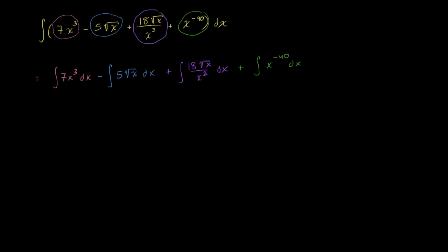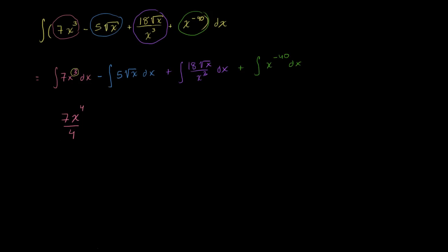Let's look at the first one. I'm going to find the antiderivative without the constant — we'll add the constant at the end to get the most general antiderivative. The exponent is 3, so we increment it by 1 to get x to the fourth, then divide by 4. So the antiderivative of 7x³ is 7x⁴/4.